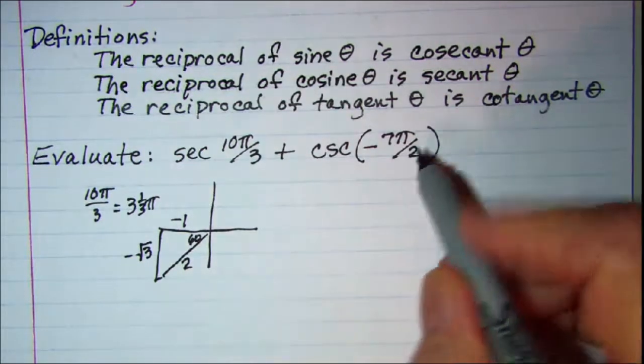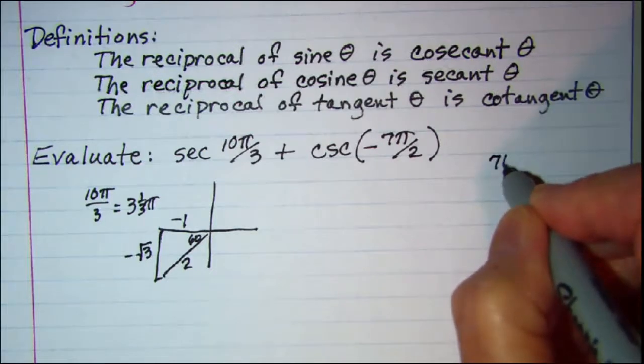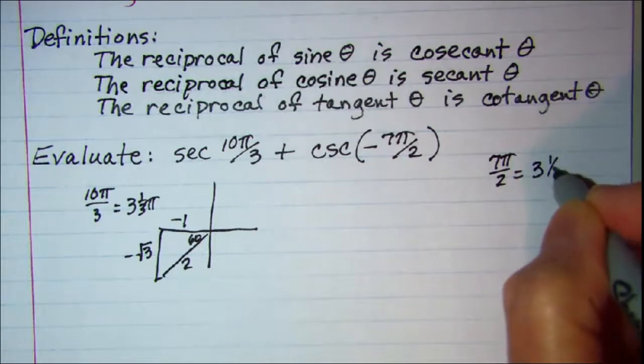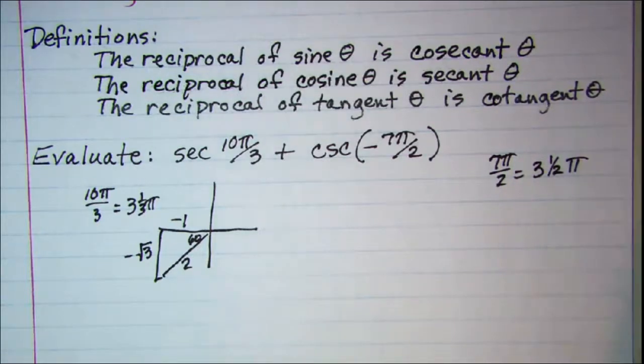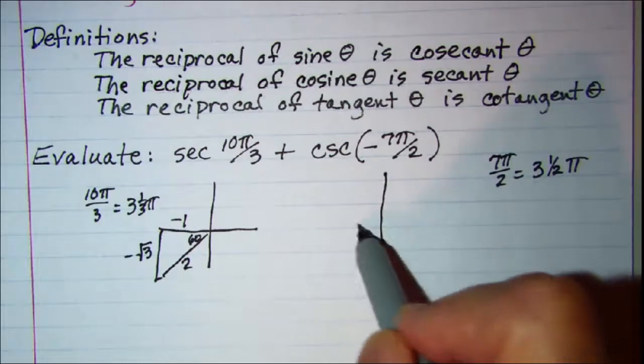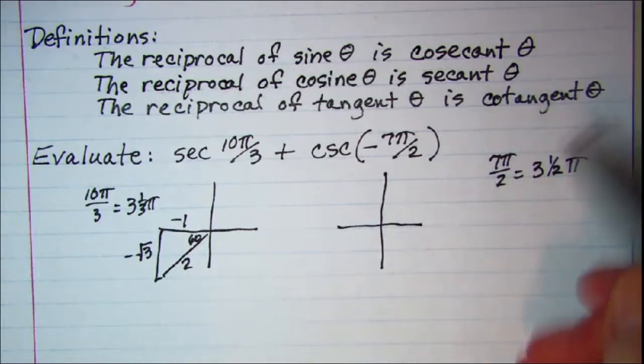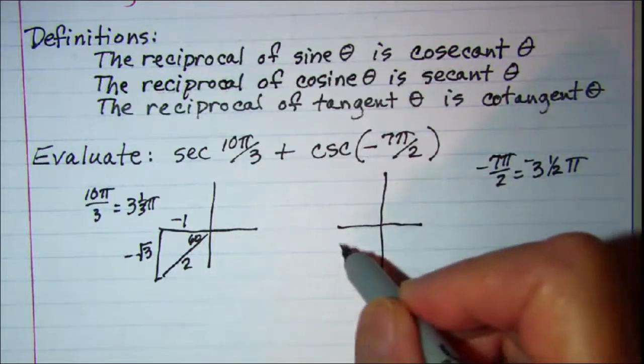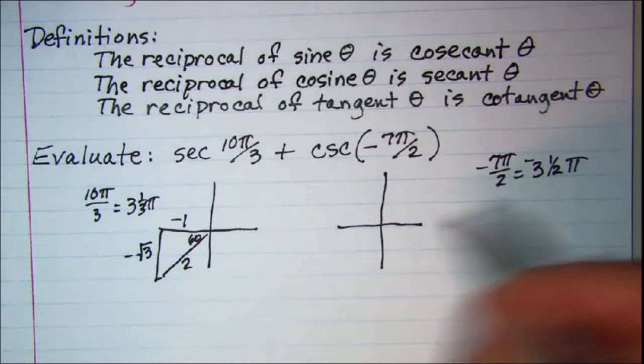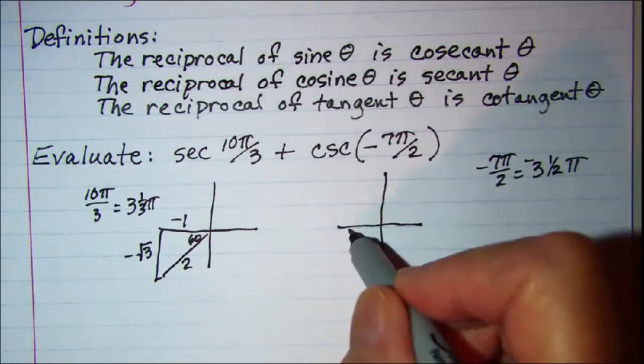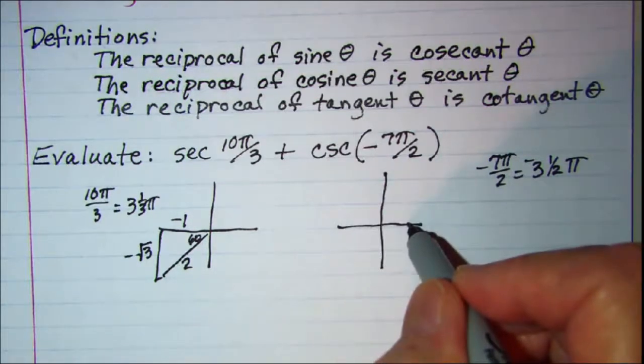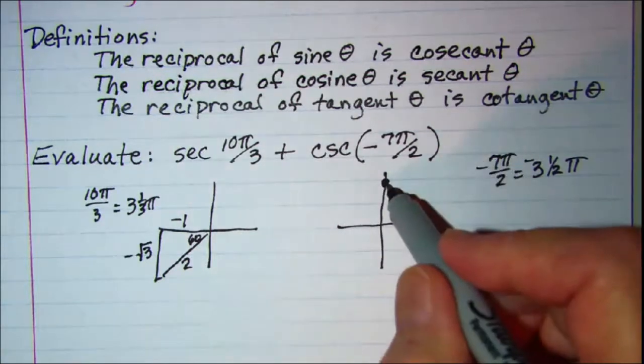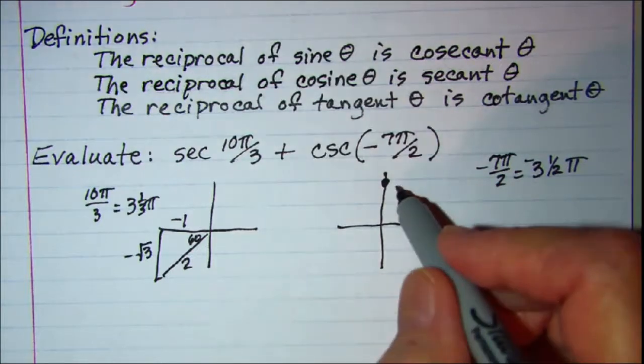So with this one we have 7π over 2. I would think of that as 3 and 1/2 π. So 1π, 2π, 3π, and then half a π puts me up here at 90 degrees. Now whenever I have to work with a quadrantal angle I need to get values of x, y, and r.